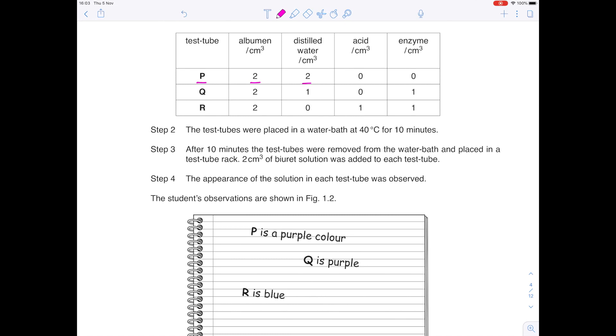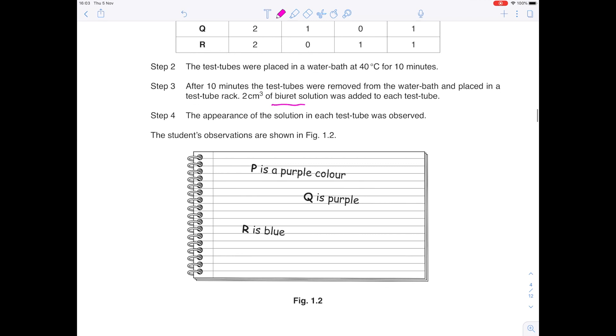The test tubes were placed in a water bath at 40 degrees for 10 minutes. After 10 minutes, the test tubes were removed from the water bath and placed in a test tube rack. Two centimetres cubed of biuret solution was added to each test tube. The appearance of the solution in each test tube was observed. The students' observations are shown in Figure 1.2. P is the purple colour. Remember, if you're looking at biuret solution, it turns purple when you've got protein. So the simple fact that P and Q are both purple means that both solutions must have contained protein. R is blue means that you've got a negative result.